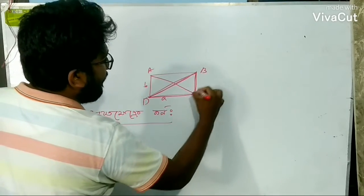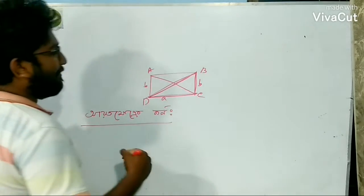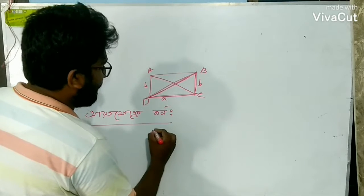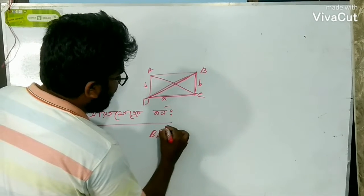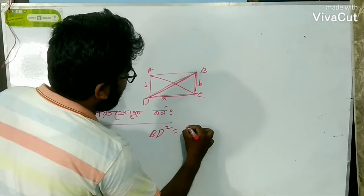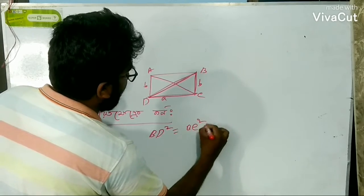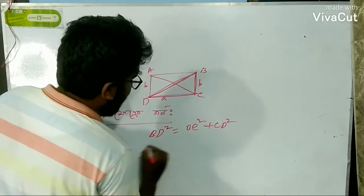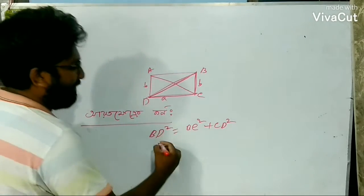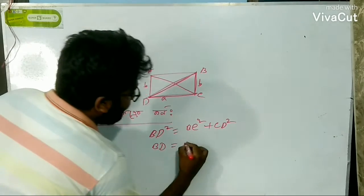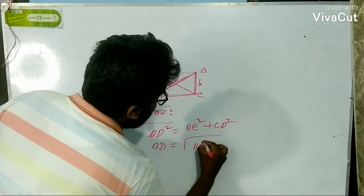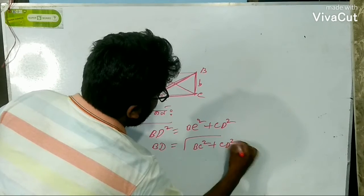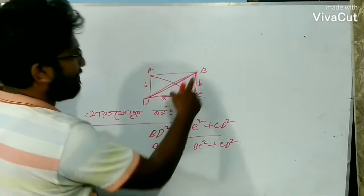I am going to take B at the same time. BD squared is equal to BC squared plus CD squared. BD is equal to the square root of BC squared plus CD squared.